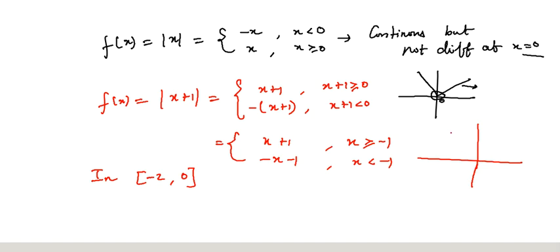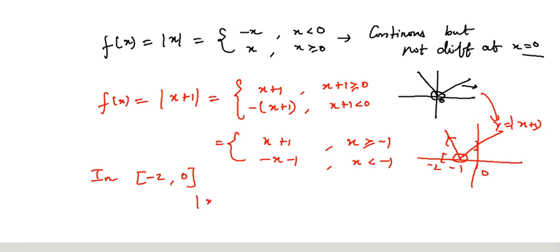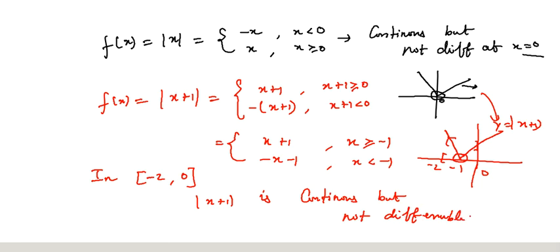|x+1| is a shift of the modulus function. The vertex is at x = -1. Checking on the interval (-2, 0), there is a sharp point coming at x = -1. So from the diagram, f(x) is continuous but not differentiable at x = -1.